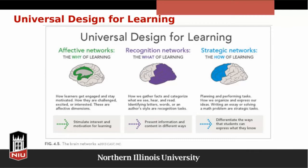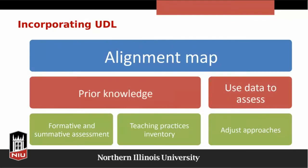Another strategy for inclusive pedagogy is Universal Design for Learning, or UDL. Consider using UDL principles to make sure all students are served by the learning experience. The essential tenets of UDL are: provide multiple means of engagement (the why of learning), multiple means of representation (the what), and multiple means of action and expression (the how). UDL has generally been understood as improving the learning environment for students with disabilities, but it applies generally to creating a more inclusive classroom for all learners.